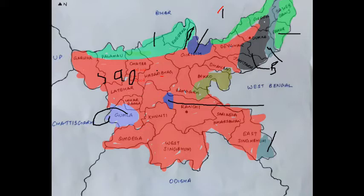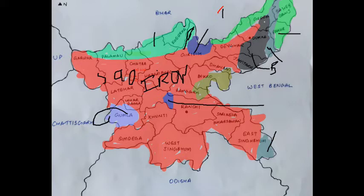Red soil is made by the weathering of archean granite, gneiss, and quartz rock — by the decomposition of archean rock. It has iron content and adequate amounts of lime and potash, but it lacks in